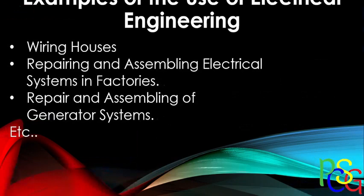Next, we'll give some examples of the uses of electrical engineering. Wiring houses is the basic one — electrical engineers come in to wire houses, set up the main breaker, and connect it to the power line outside so you can have electricity in your home. Then you have repairing and assembling electrical systems in factories — conveyor belts, packaging units and similar things. These tend to involve a lot of electrical components, though they sometimes include electronic components as well.